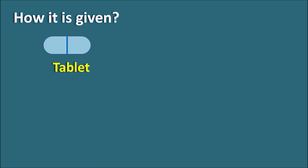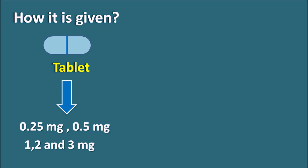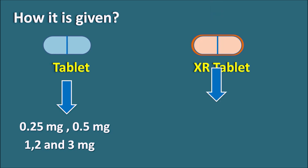How is it given? Alprazolam is available as tablets at doses of 0.25 mg and 0.5 mg, as well as 1 mg, 2 mg, and 3 mg. It is also available as an extended-release tablet at 0.5 mg, 1 mg, 2 mg, and 3 mg. Initially, the dose can be started at 0.25 mg three times daily, but doses can be increased based on the patient's condition.